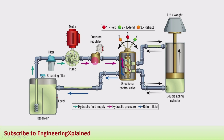A pressure control valve is used as a pressure regulator, and the direction control valve positions shown here control the direction of fluid flow — in forward motion, return motion, or held at that position.